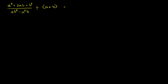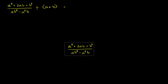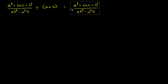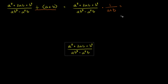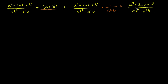This is equal to this whole expression times the inverse of this. If I divide by something, that's the same thing as multiplying by the inverse — multiplying by 1 over a plus b. So the denominator is going to be ab squared minus a squared b times a plus b.